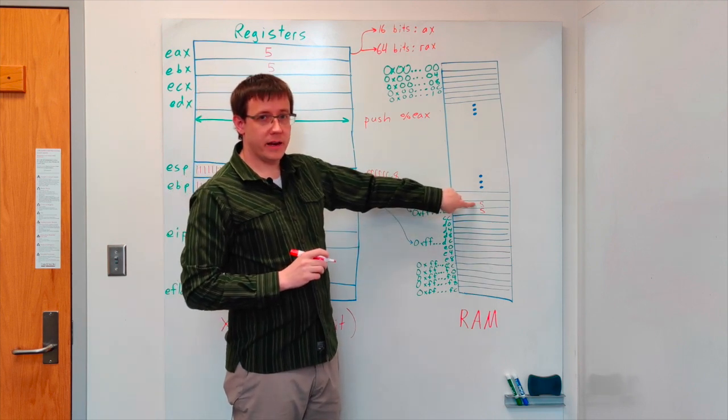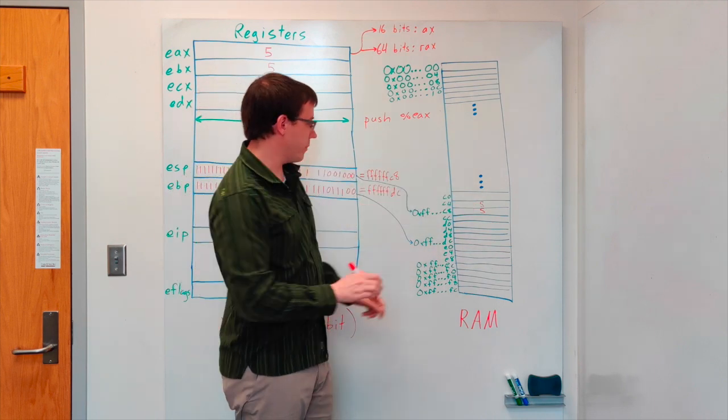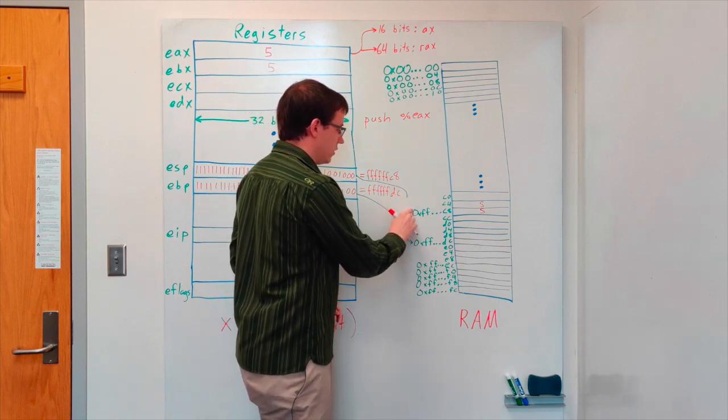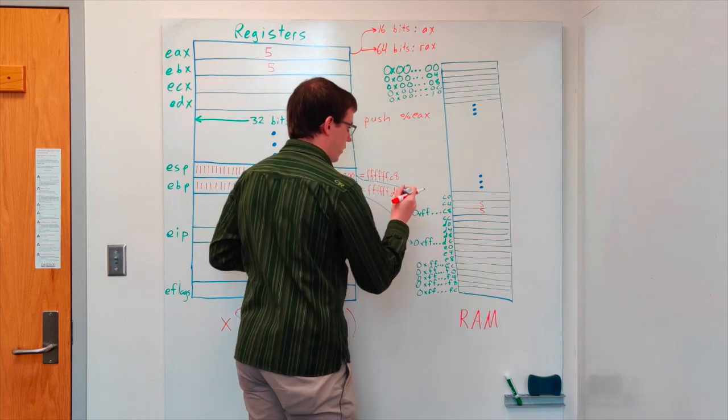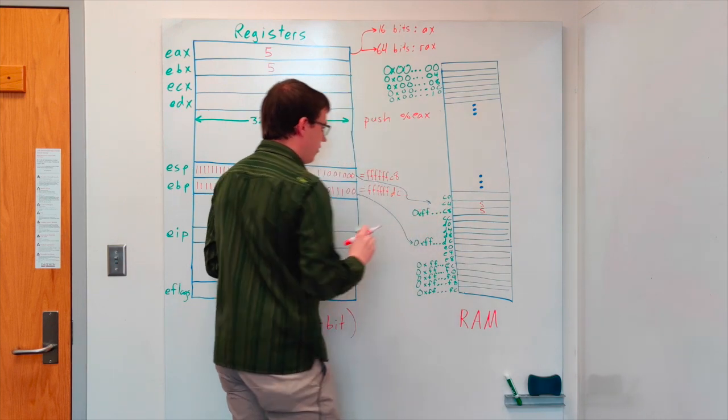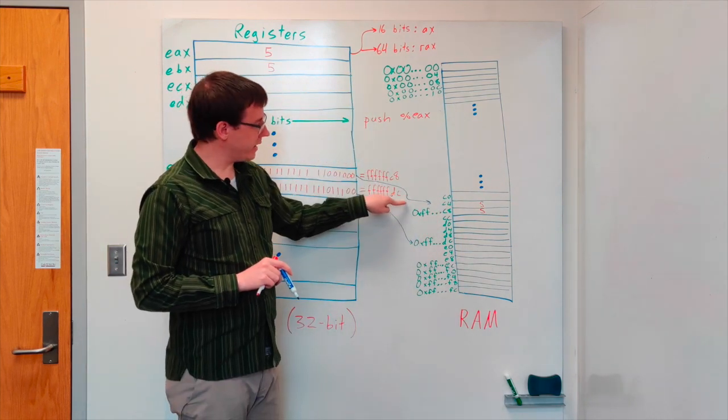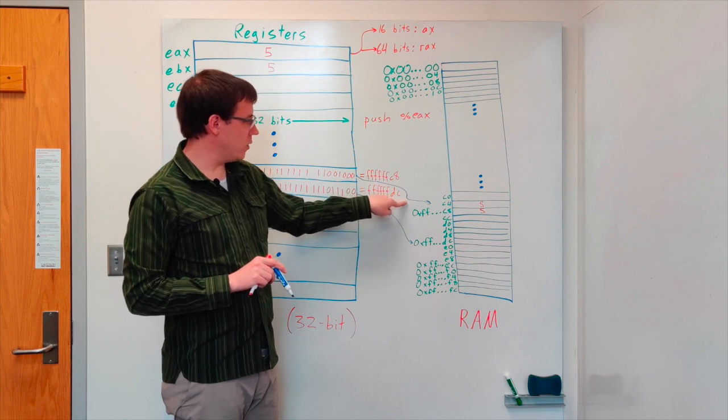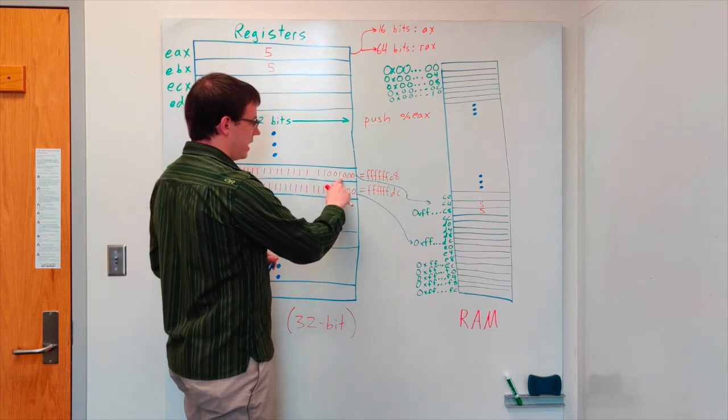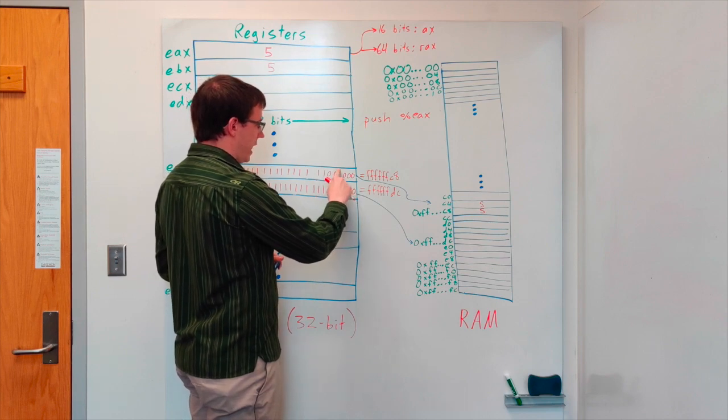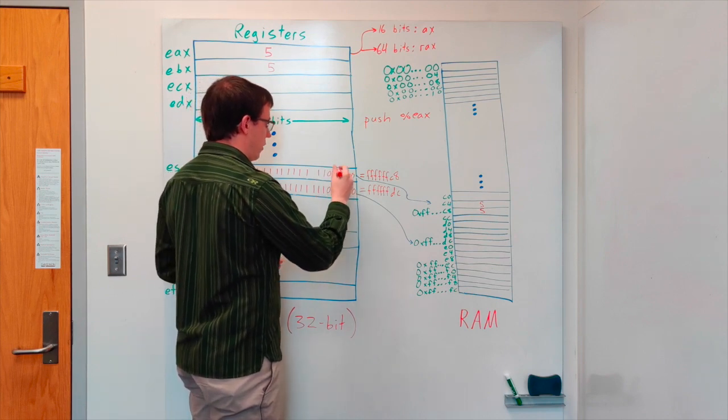So we'll put the data in the location above the stack pointer, and we'll also move the stack pointer to now point to this location, which means that we've subtracted four from the value in the ESP register. The ESP register currently ends with an eight, so we'll replace that with a four.